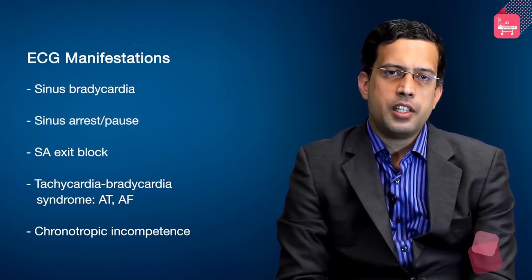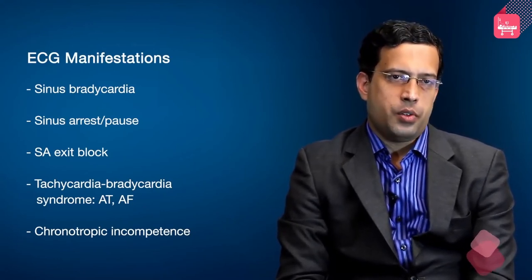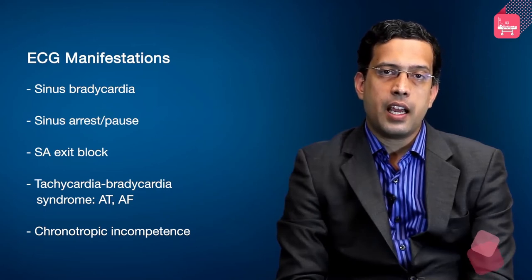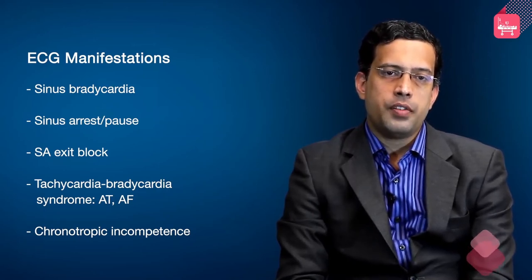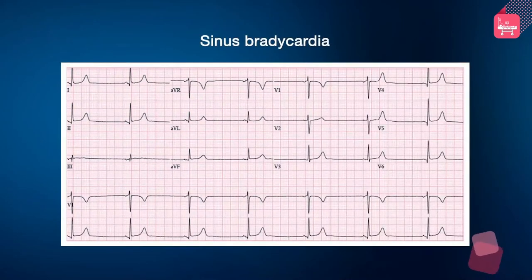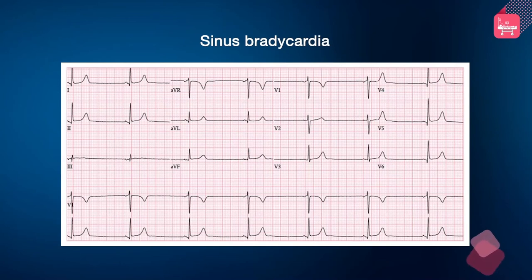The ECG manifestations of sinus node dysfunction include sinus bradycardia, sinus arrest or sinus pause, sinoatrial exit block, tachycardia-bradycardia syndrome, and chronotropic incompetence. Sinus bradycardia is simply a slowing of the sinus rate below normal. As seen in this ECG, everything else looks normal — you have a normal P wave and normal QRS complexes — but the heart rate is below 60 beats per minute; in this instance approximately 45 beats per minute. This is the most common manifestation of sinus node dysfunction.